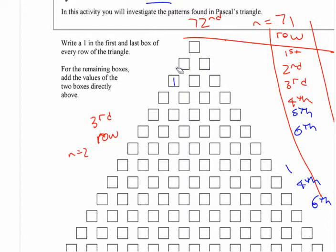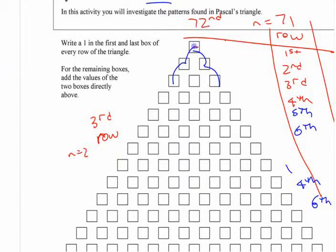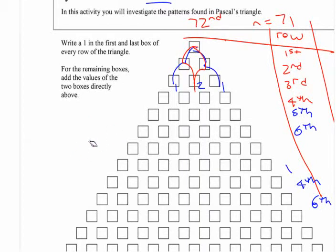Think of it as a setup where you drop a ball in at the top and there are little pegs that make it go one way or the other. There's only one way the ball can get to the far corners — it goes one direction all the way. But there are two ways it can get to the middle square: it can go this way then that way, or that way then this way. Those numbers in Pascal's Triangle represent the number of ways you can physically get to each position.